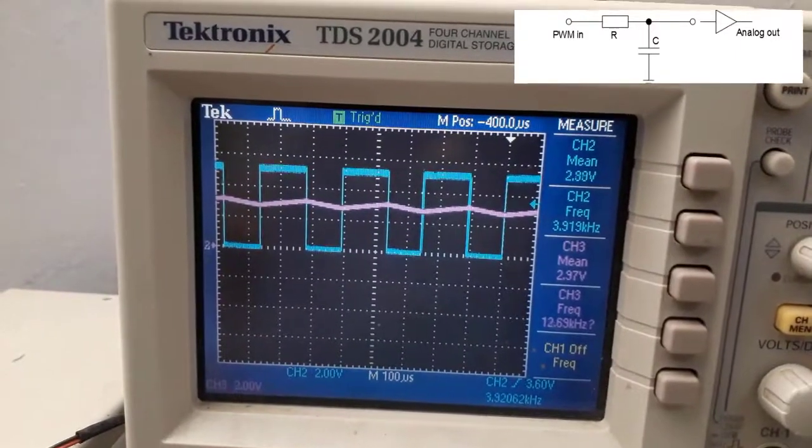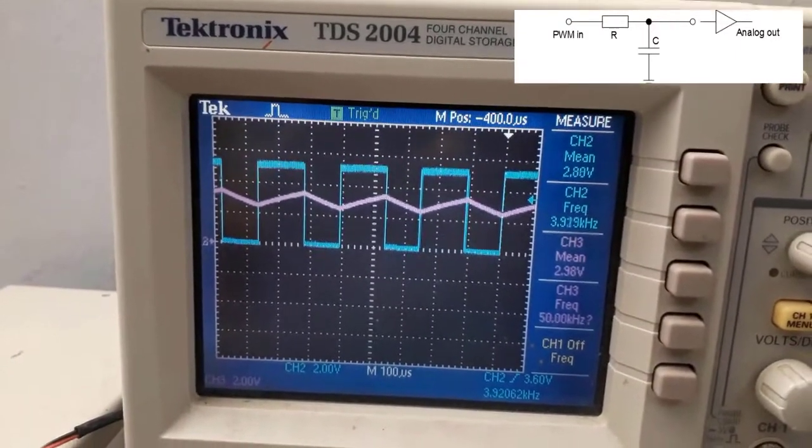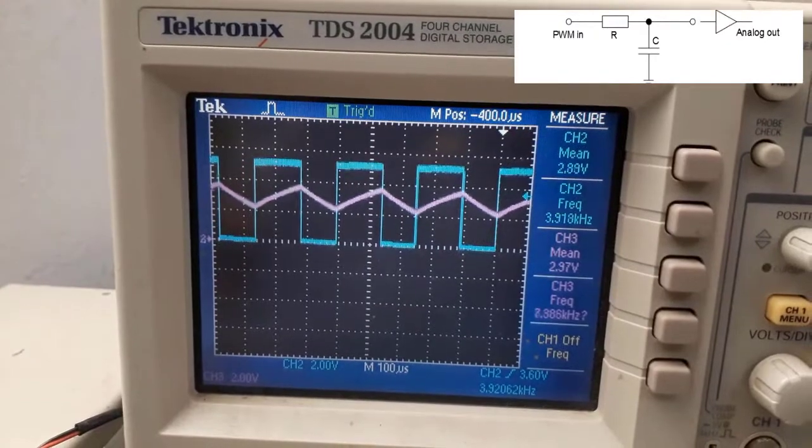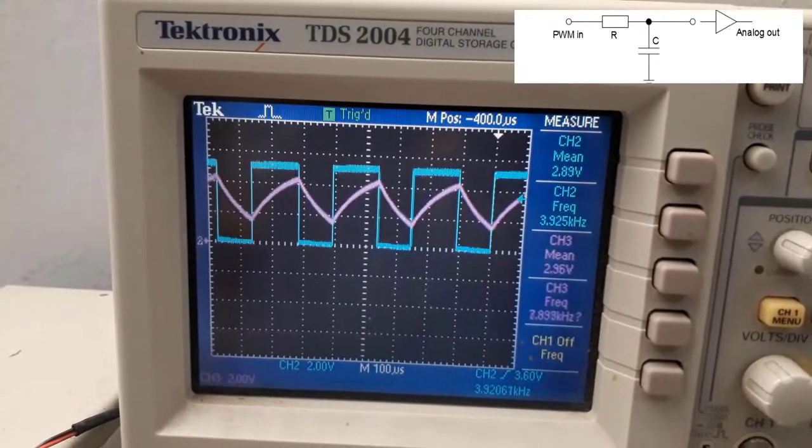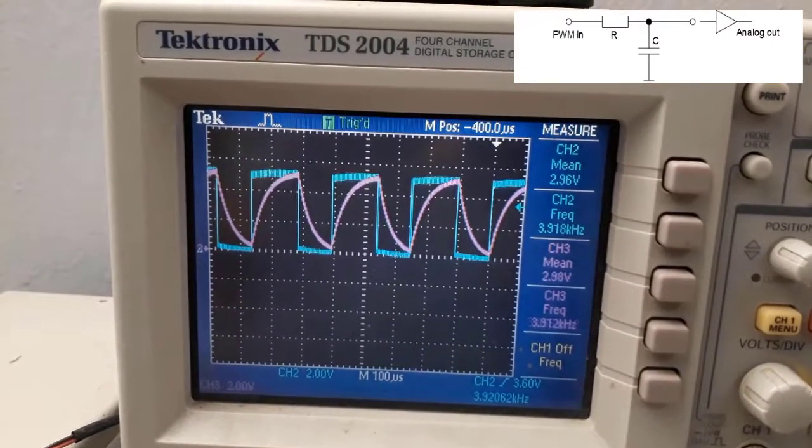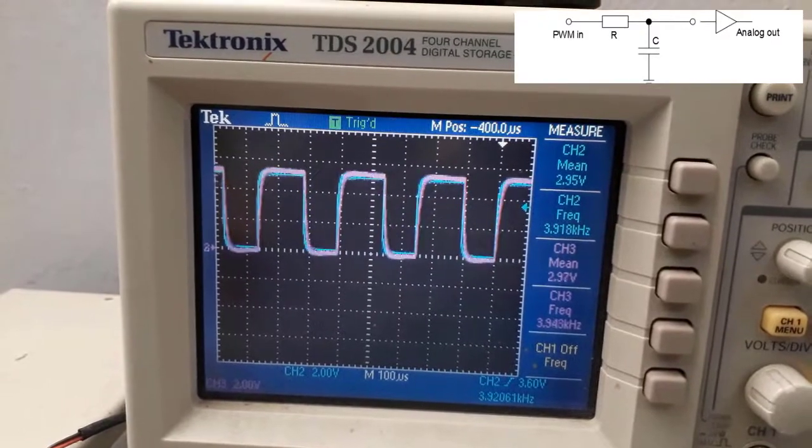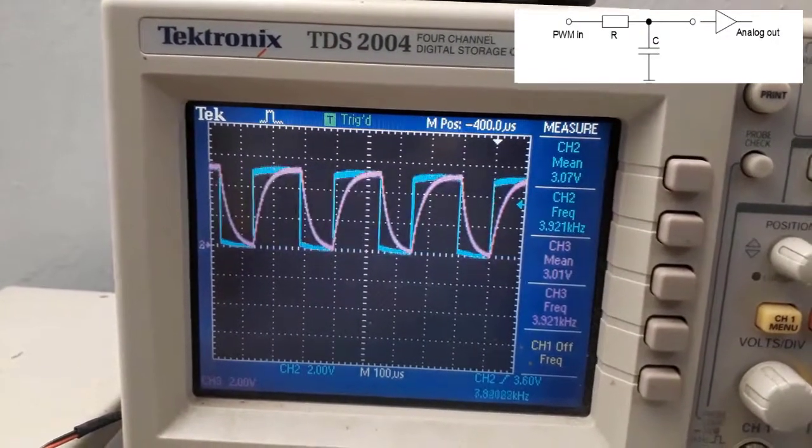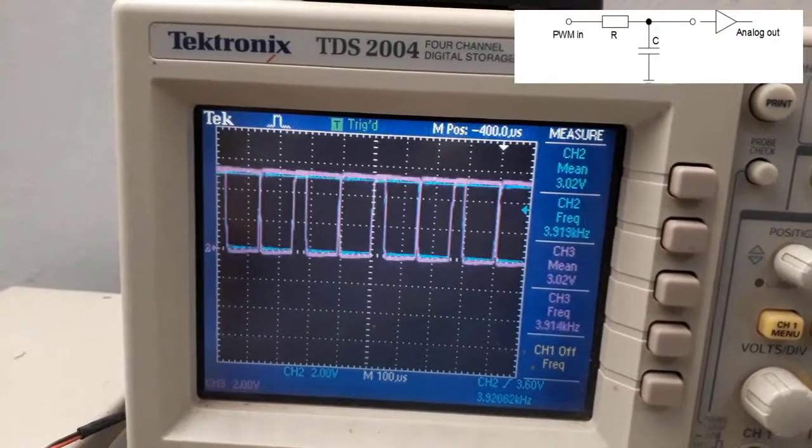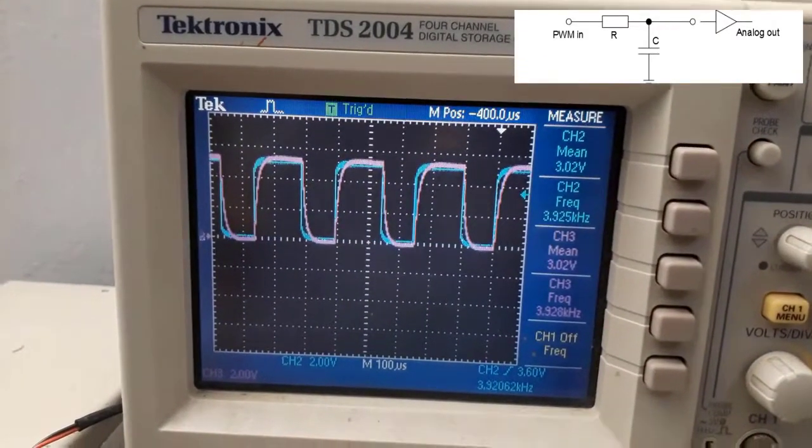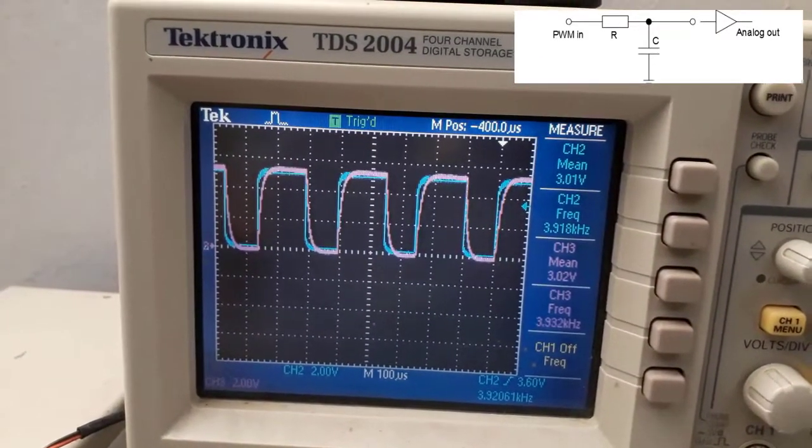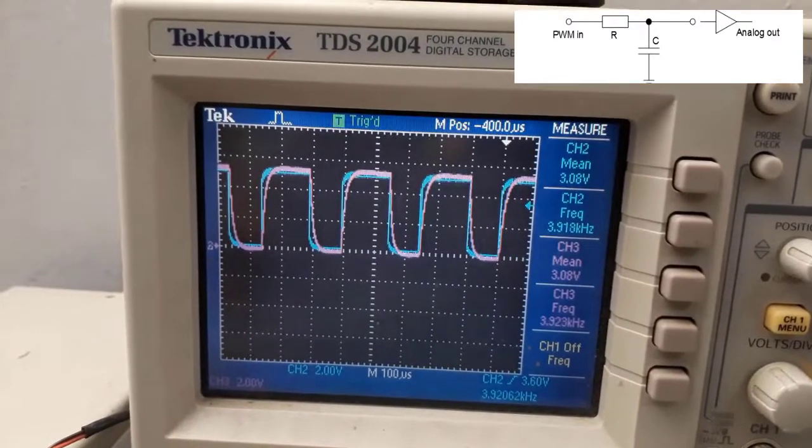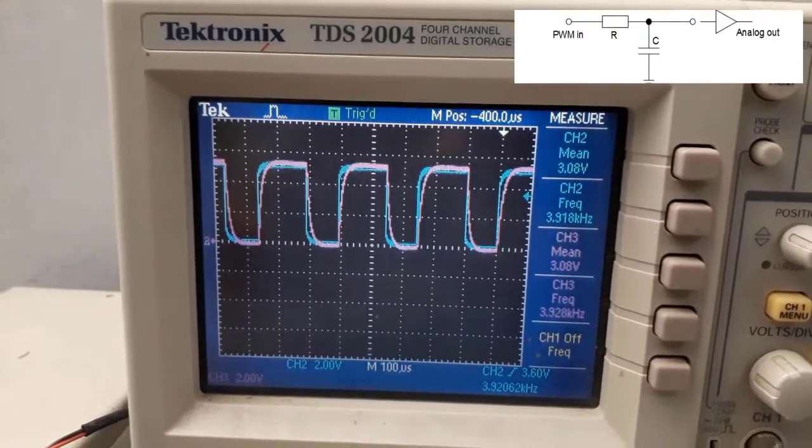Now, if I start changing my potentiometer resistance, you can see the shape of the DC signal. The constant signal on channel 3 is changing. And I can basically nullify my PWM, my RC resistance to basically set the signal back to a PWM, equal to a PWM signal.